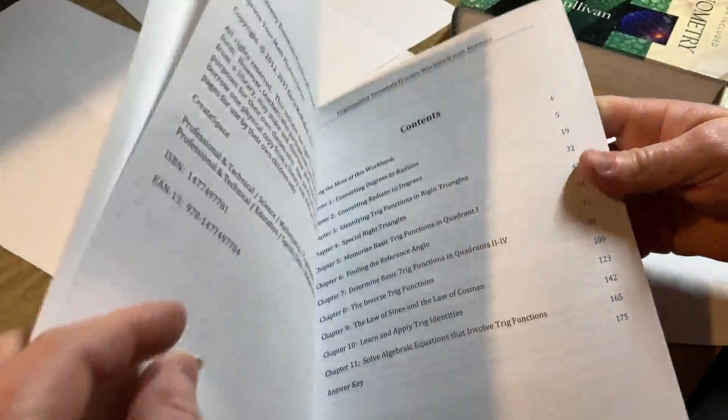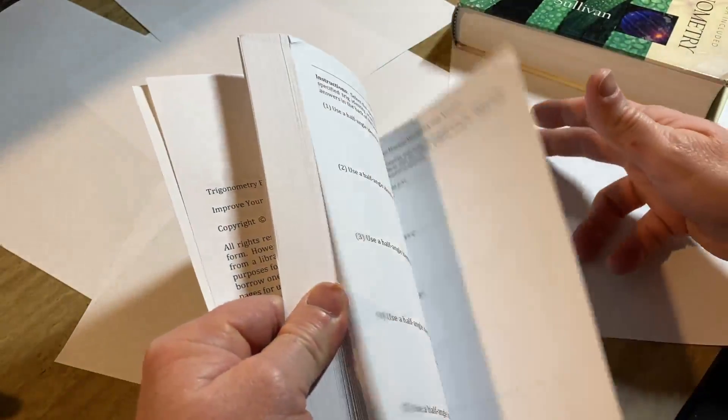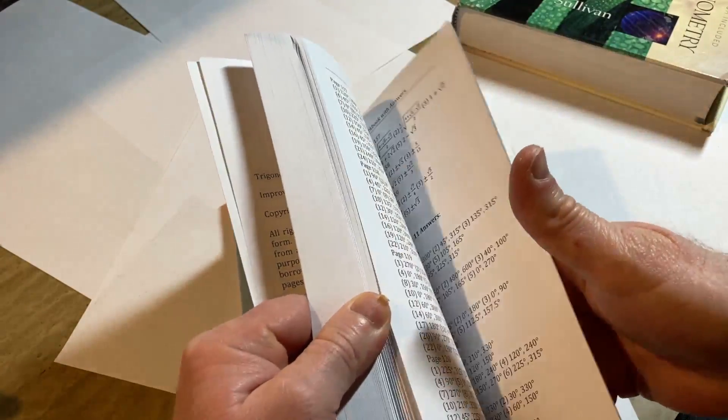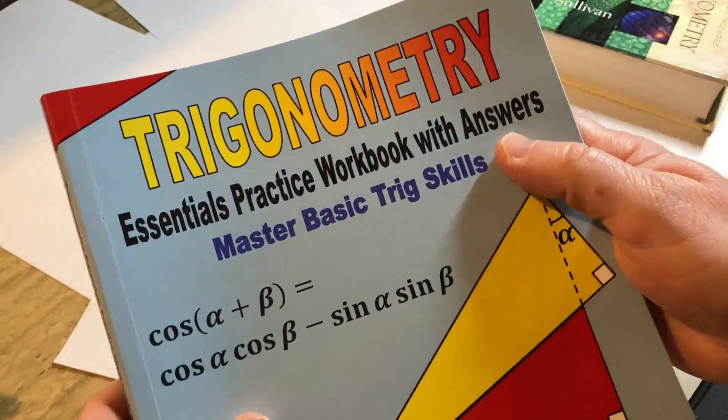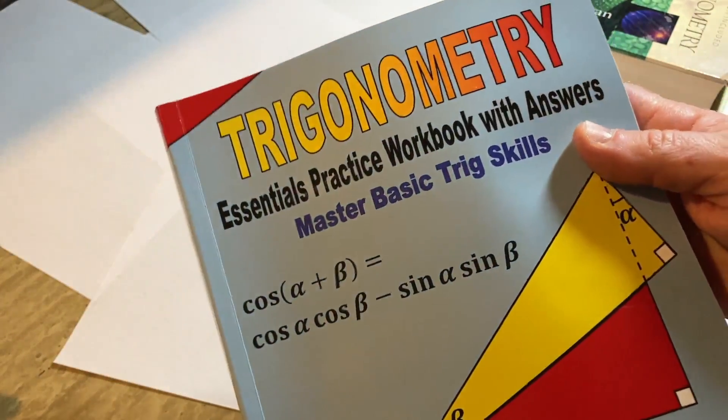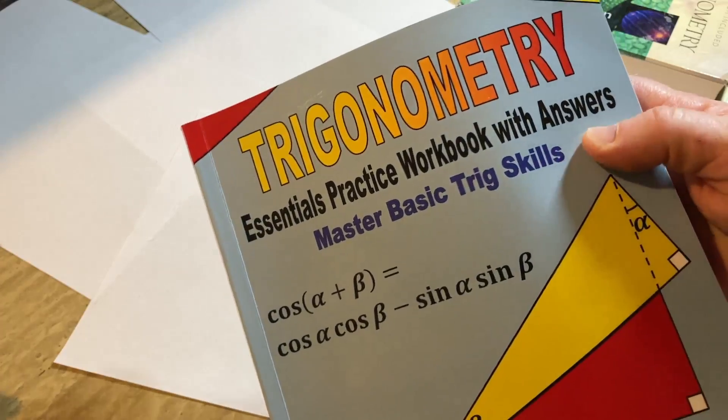He has answers to every single problem, not full solutions. He's really clever. Whenever he has solutions, he'll put solutions here. Like if it says answers, he just has the answers. But if he says full solutions, he's got the full solution. So it's pretty cool.